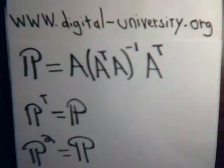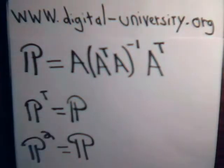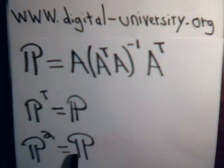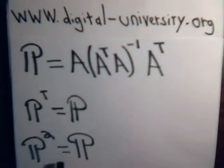In this video, we're going to prove two important, or two fundamental, properties of the projection matrix: that it is symmetrical, and if you apply it twice — take the square — you just get the projection matrix. Matrices where you square them and just have the original matrix are sometimes called idempotent matrices. We're going to prove both of these properties in this video.